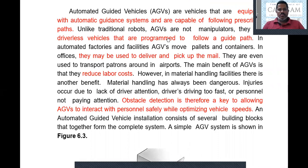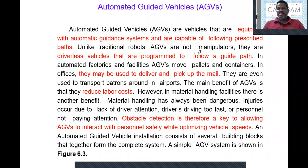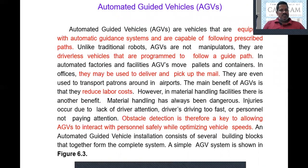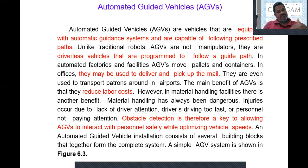All these vehicles are pre-programmed. Unlike traditional robots, AGVs are not manipulators. A manipulator is a device which consists of a number of links to perform some task — it is the part of a robot. But AGVs are not like a robot manipulator; they are vehicles used to transport goods between stations in a predetermined or programmed path. In that way, the vehicles are guided.